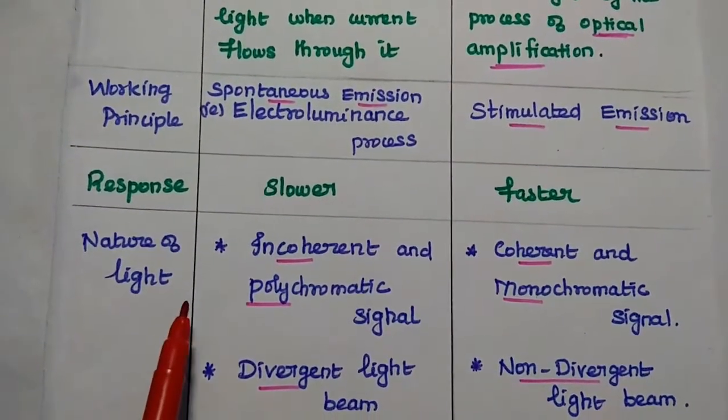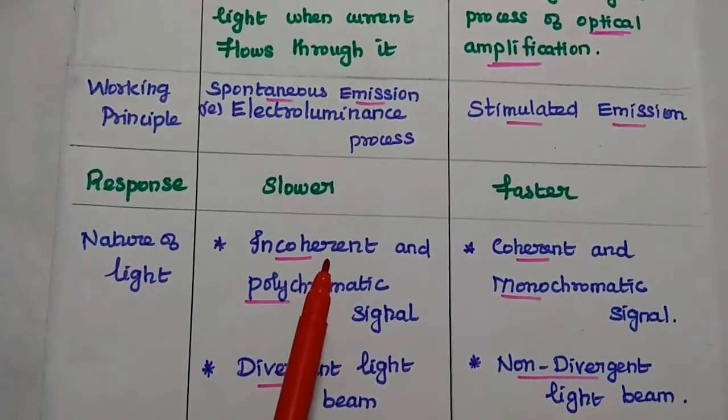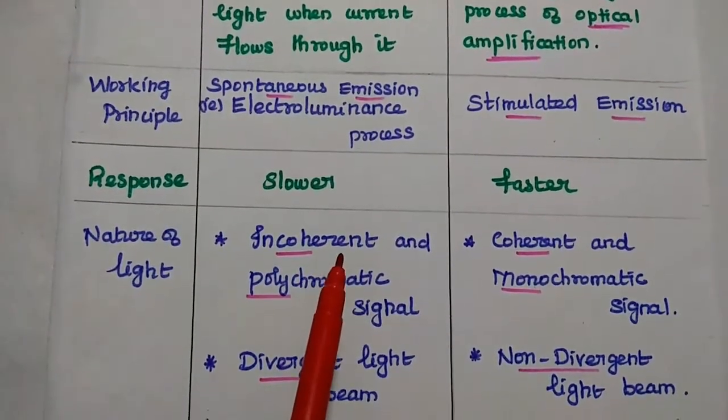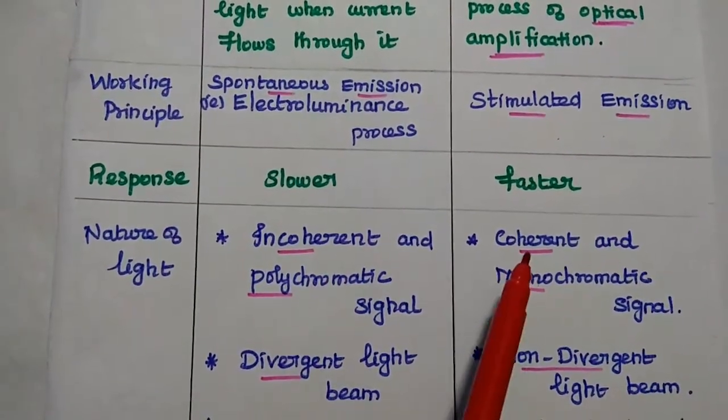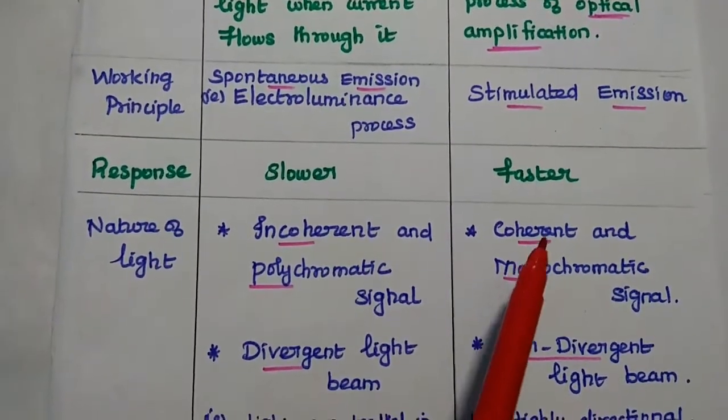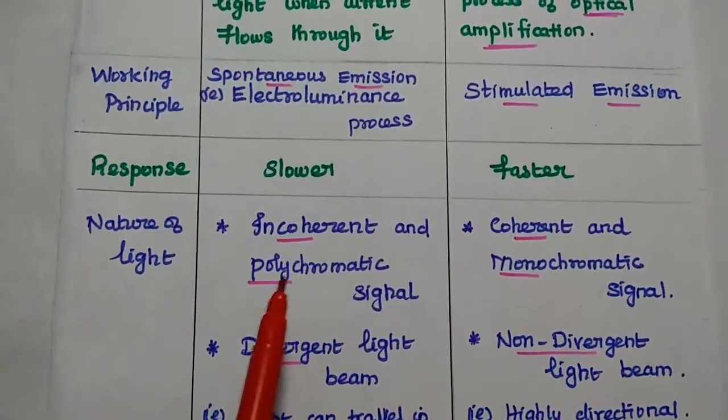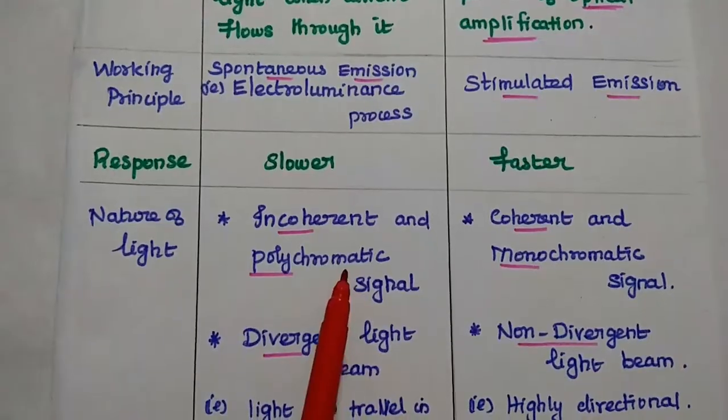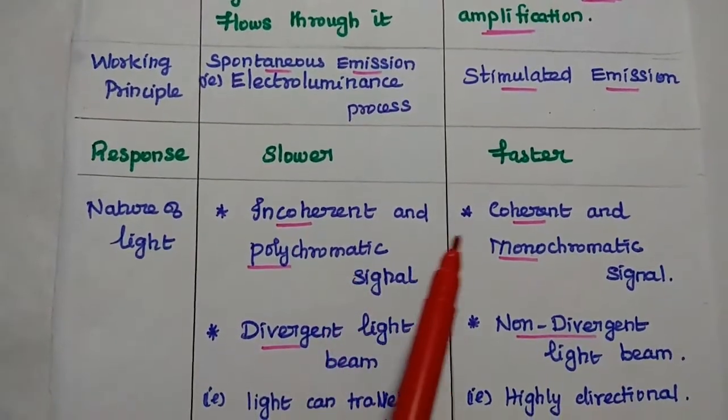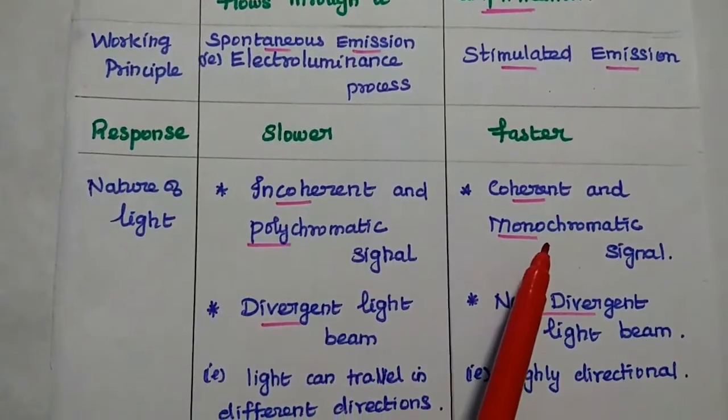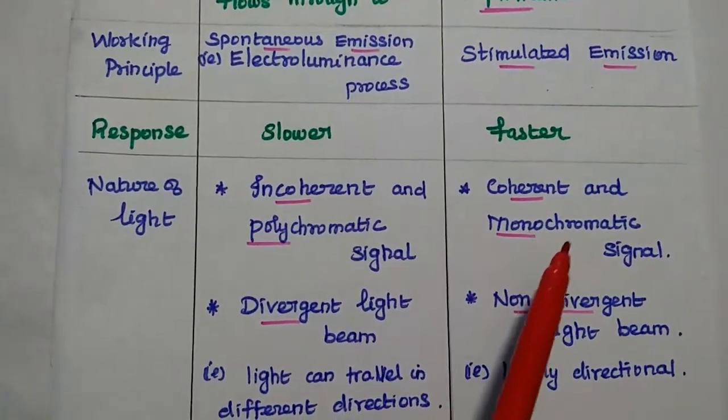The nature of light for LED is incoherent, that means photons are out of phase. For laser, it is coherent light, meaning all photons are in phase. It is polychromatic signal, that poly represents multiple colors are available in LED. But for laser, only one color is available, that is called monochromatic signal.